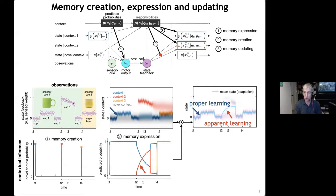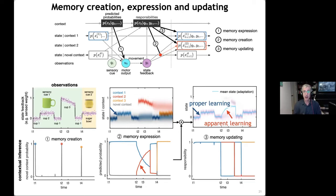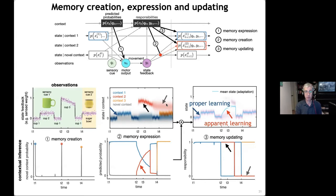Many phenomena in motor control are apparent learning rather than proper learning. Having made your movement, you get state feedback and can re-estimate context probabilities. These responsibilities gate learning: when responsibility is high for the red context you update rapidly your beliefs about the red state; when responsibility is low you can't update it and it diffuses out. This deals very nicely with memory creation, memory expression, and memory updating.